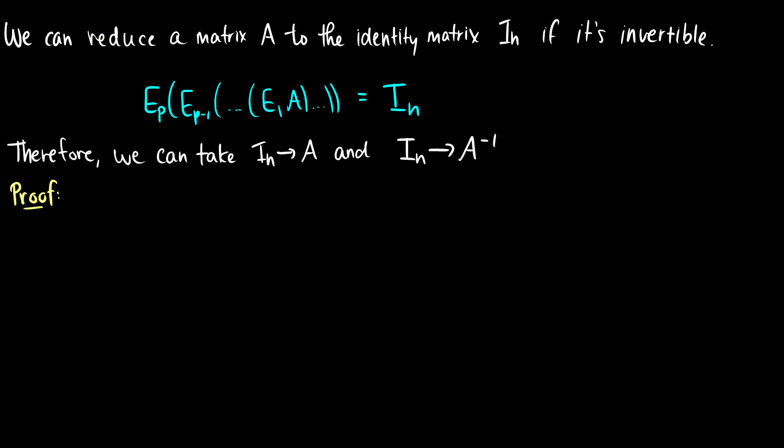So that being said, here's how we can use these elementary matrices to find the inverse of a matrix. If we have a matrix A and a matrix that is the identity matrix, and if it's invertible, we can do a bunch of elementary operations on A to get back to the identity matrix. So that means that if we can take A to the identity matrix, then we can take the identity matrix to A inverse.